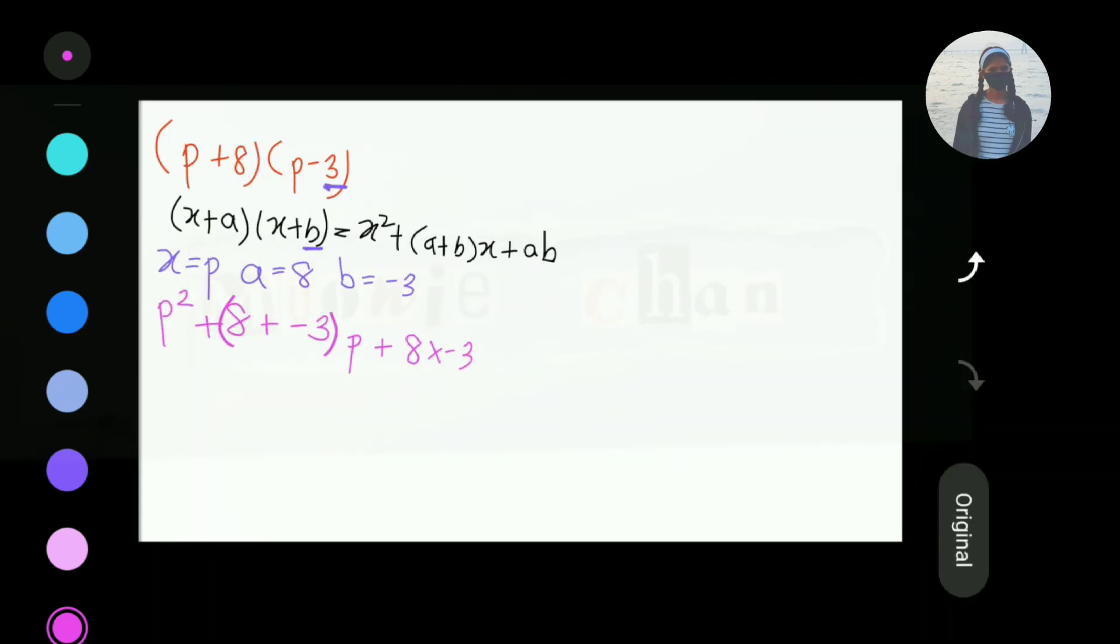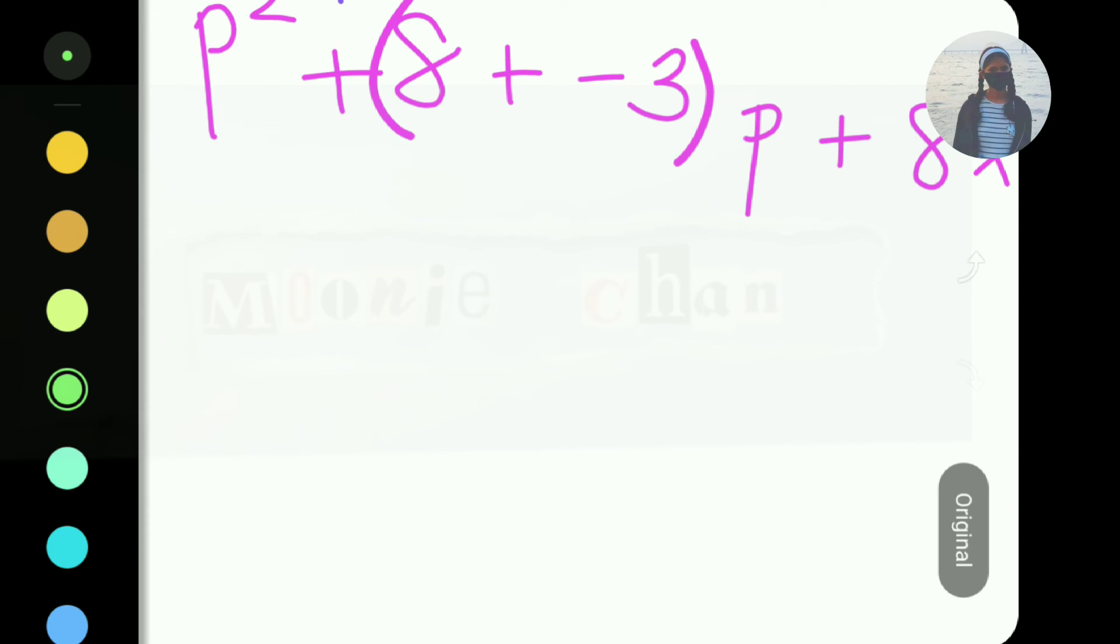Okay, now this looks really easy. Great. So, P square. Now, 8 plus minus 3. Plus and minus is minus, right? So, 8 minus 3 is 5. So, we'll write 5.